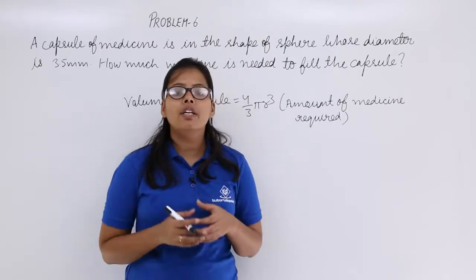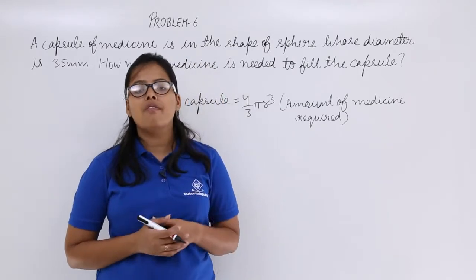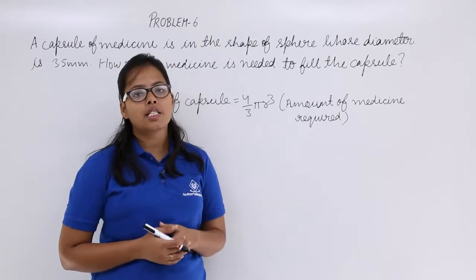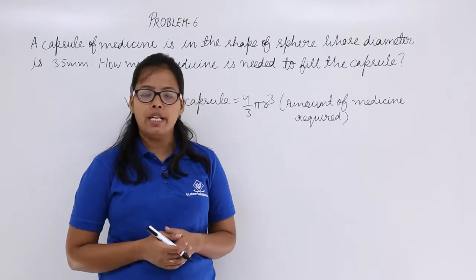You know that you have given diameter which is 3.5 mm. So half of that diameter will be the radius. Now use that radius here in this expression to calculate amount of medicine required.